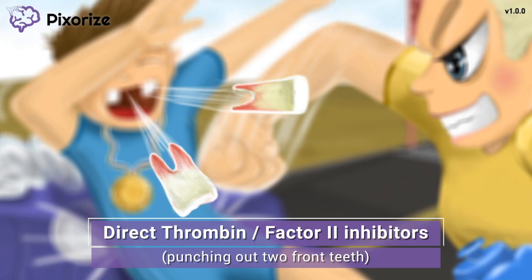Direct thrombin inhibitors prolong thrombin time. Thrombin time is a lab test that measures how long it takes for a blood clot to form after thrombin is added to a patient's plasma. It makes sense that anything that inhibits or impairs the function of thrombin will increase thrombin time — so a thrombin inhibitor will increase thrombin time.